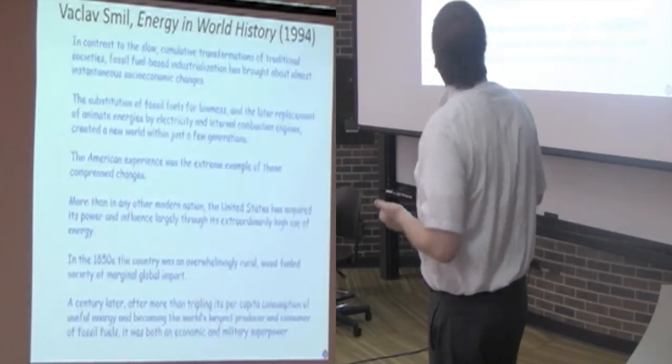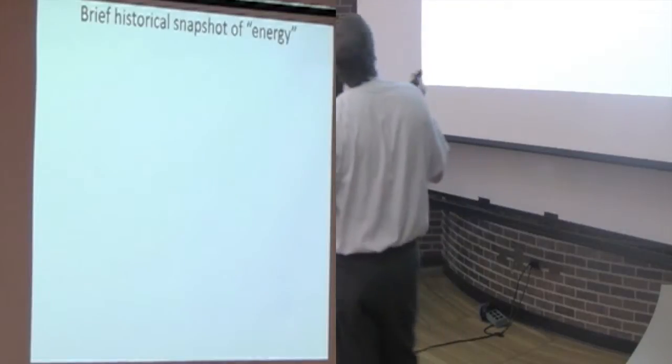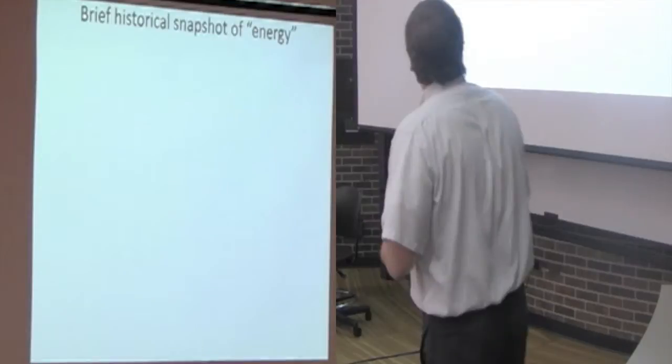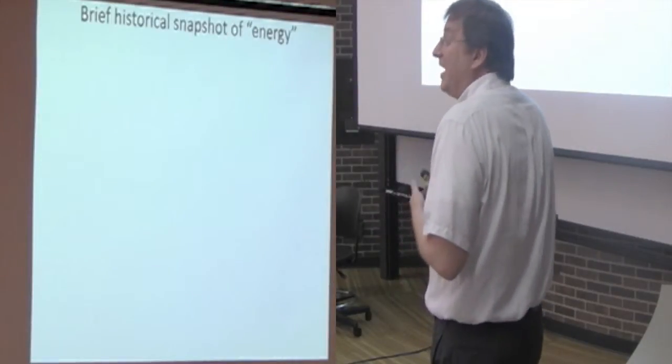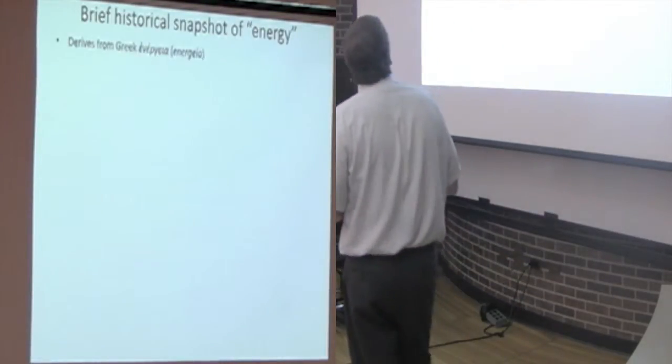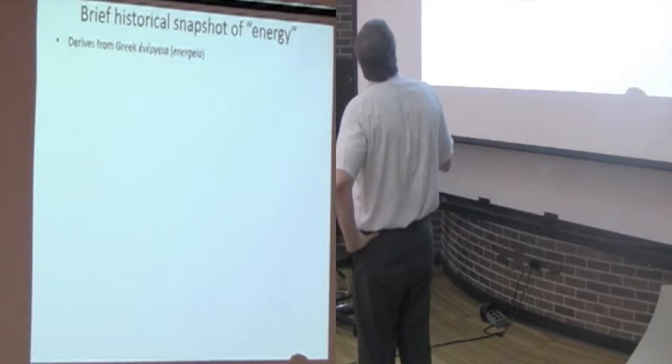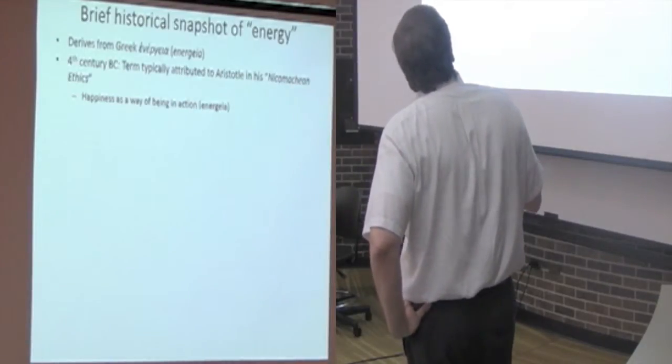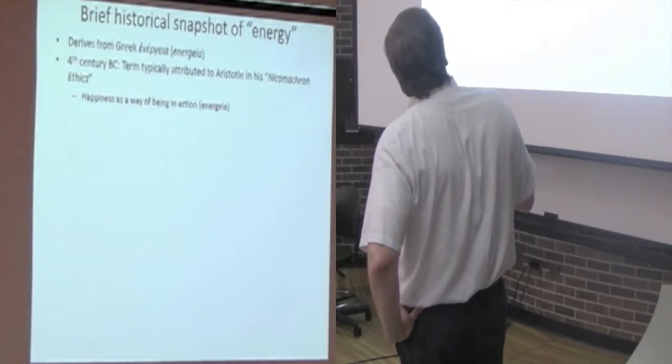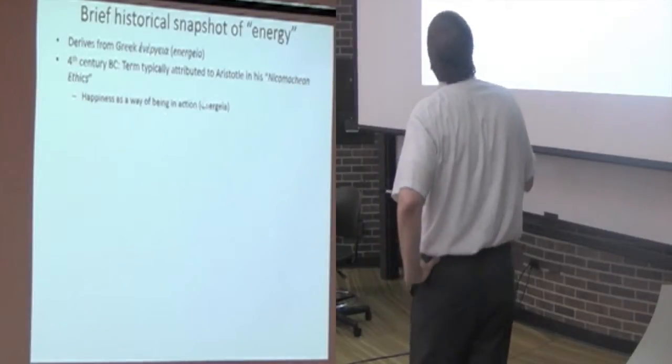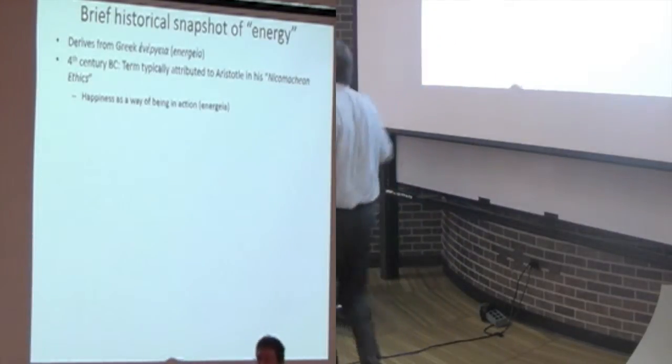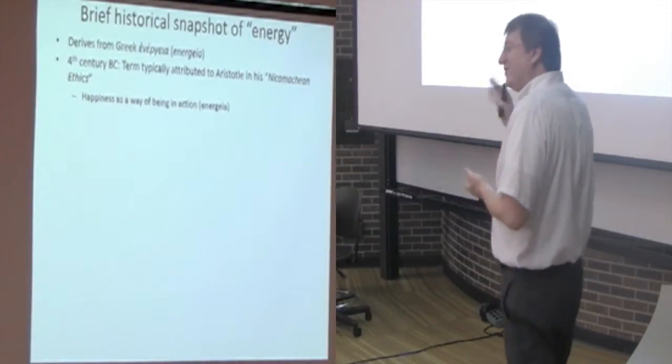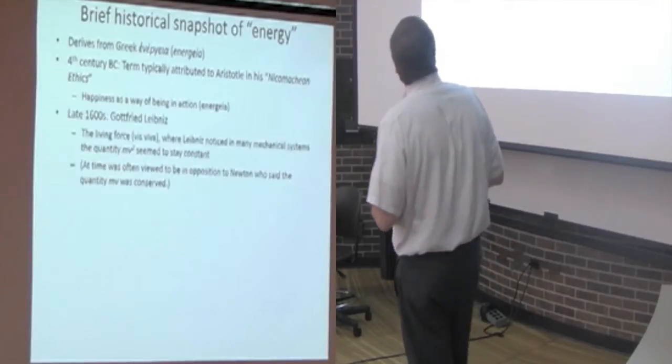All right. So let's now, because this is all about energy and what is energy, let's do a little bit of talk from the physics perspective or the historical perspective of energy. So let's set the foundations here for what do we mean when we mean energy. And I think we'll find we all may mean somewhat different things. Historically, it derives from this Greek work, Energia. The fourth century BC, it was typically attributed to Aristotle as happiness being a way of being in action. So I'm happy, you're happy here because we're in action, right? So there's energy there. And maybe there's hints of that in terms of the physics that still hangs around today.